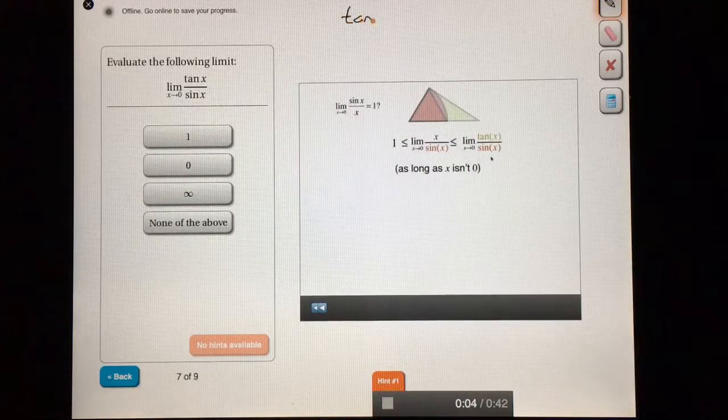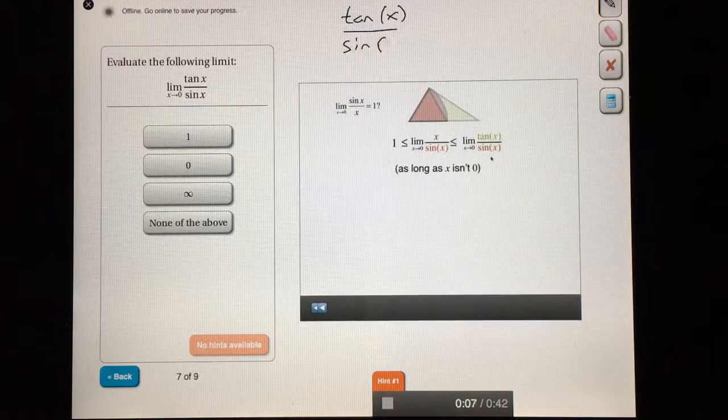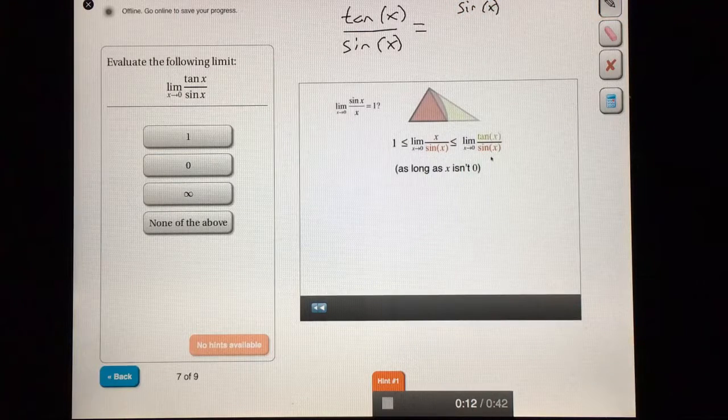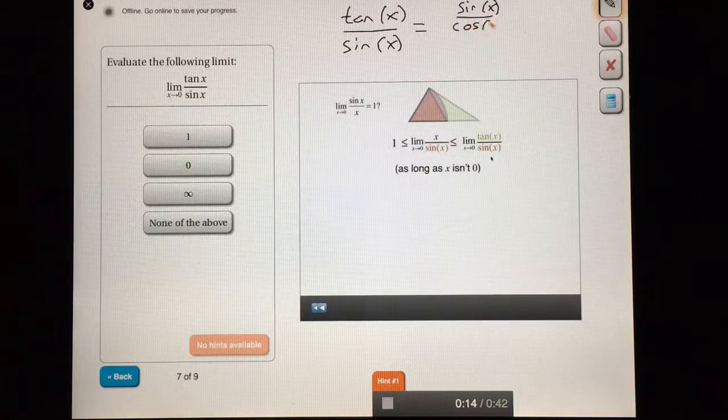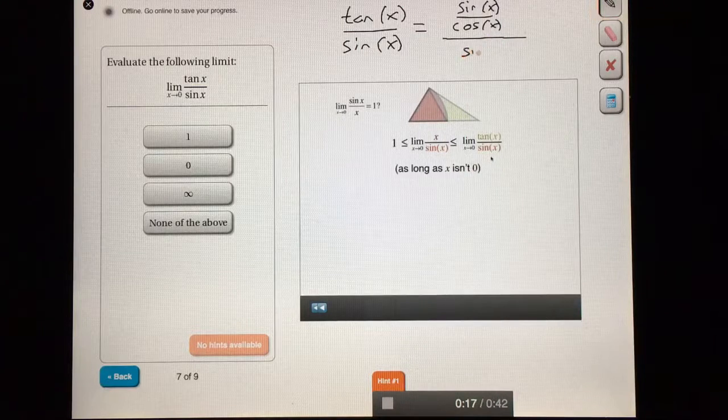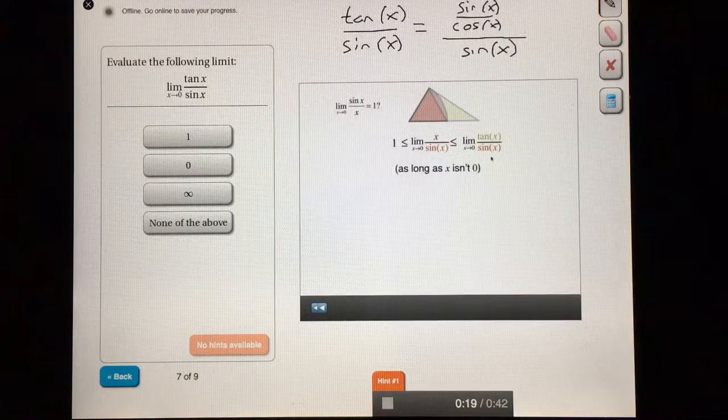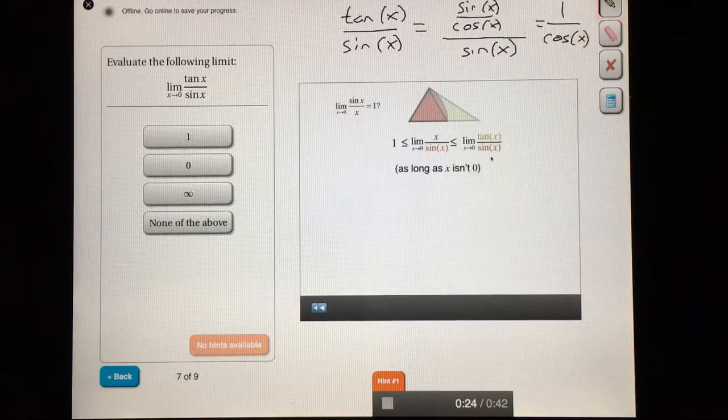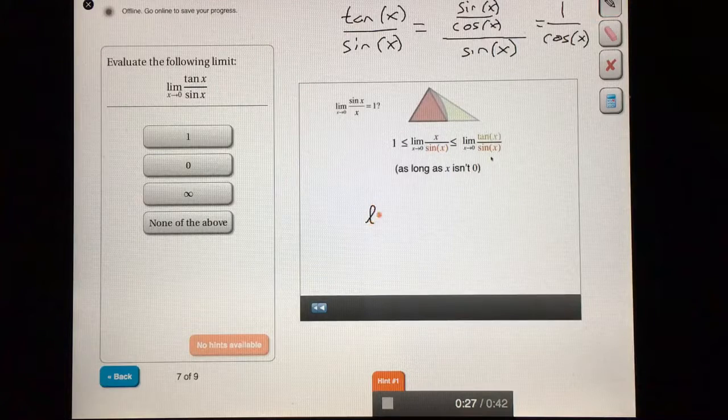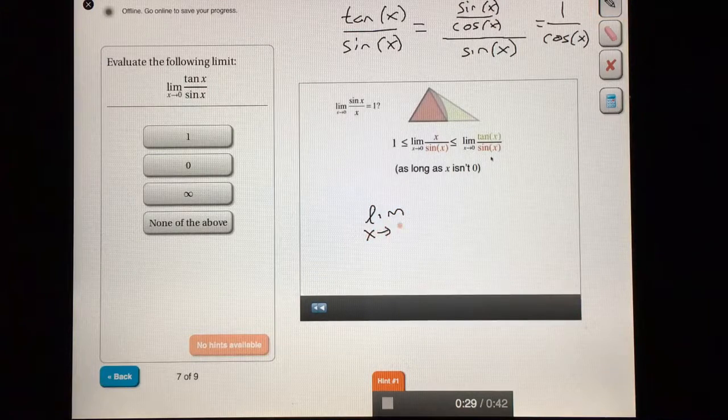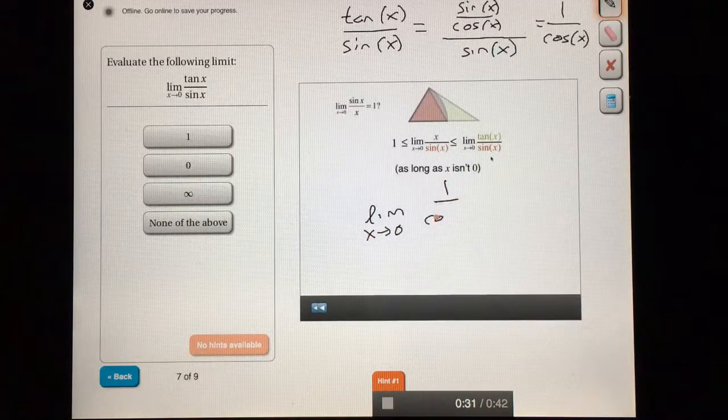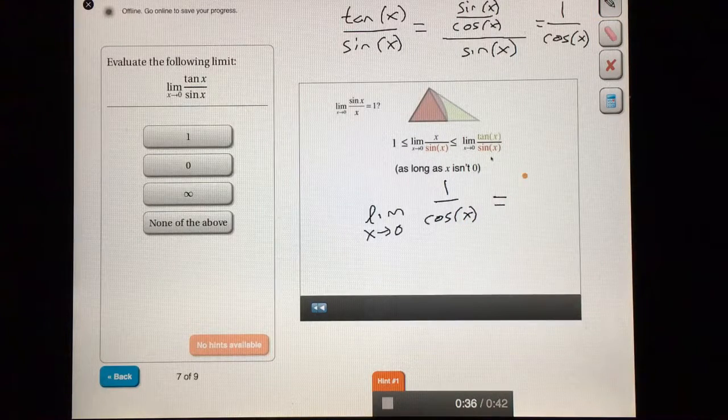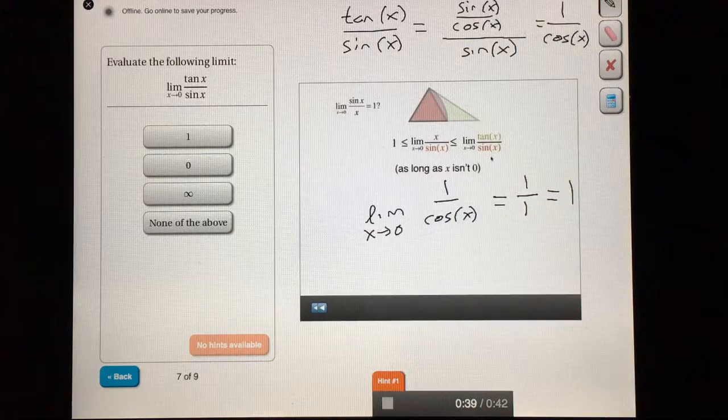Let's take a look at tangent of x over sin of x. We can write tangent of x as sin of x over cosine of x. And we can divide that whole thing by sin of x. If we simplify this, we're left with one over cosine of x. The sin of x is cancelled out. Well, that's a little bit easier. What's the limit as x approaches zero of one over cosine of x? Well, we can just plug in zero for x, because the cosine of zero is one. This is one over one, which is one.